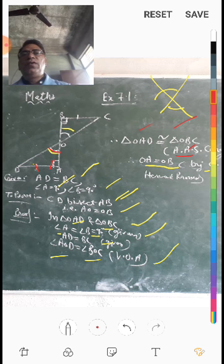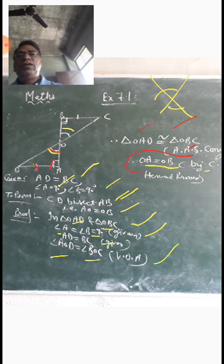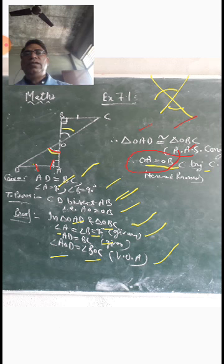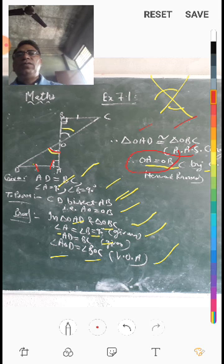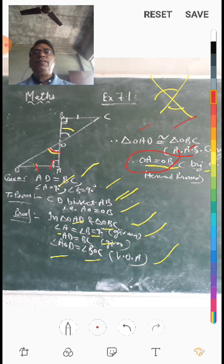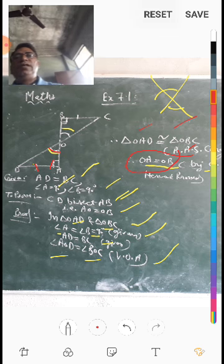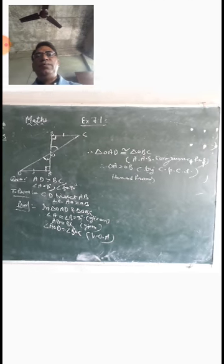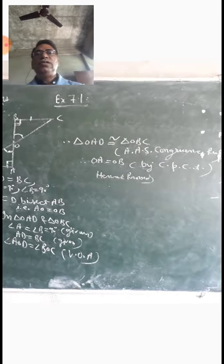Now we have to prove that OA is equal to OB. OA and OB are corresponding parts of the two congruent triangles OAD and OBC. So we can write OA equals OB by CPCT, which proves that CD bisects AB.